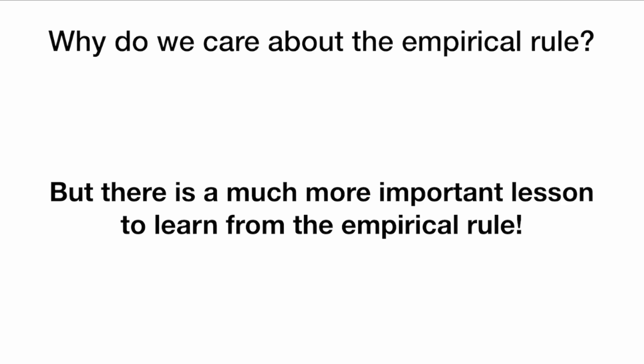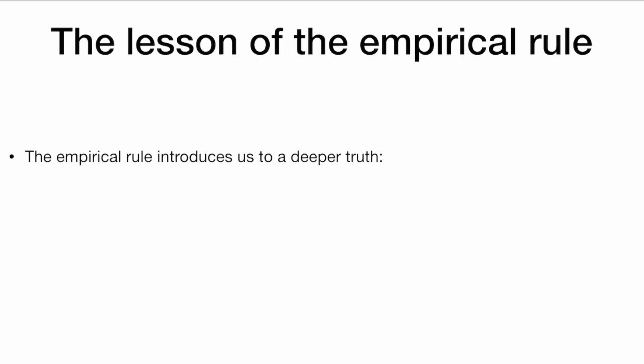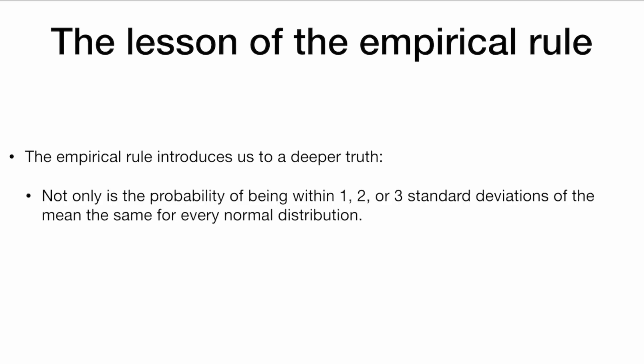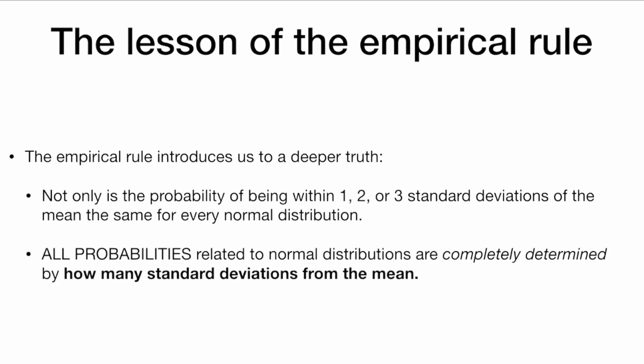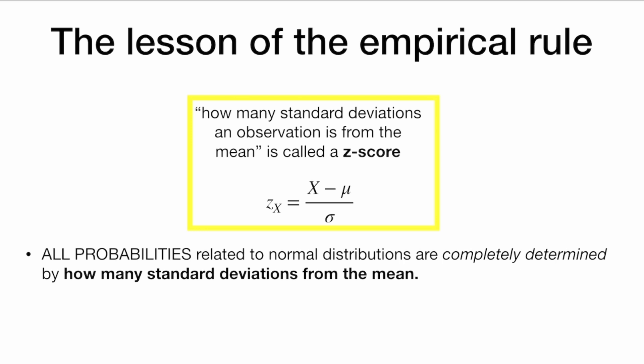But there is a much more important lesson to learn from the empirical rule. Not only is the probability of being within one, two, or three standard deviations of the mean the same for every normal distribution, but all probabilities related to normal distributions are completely determined by how many standard deviations from the mean that observation is. How many standard deviations an observation is from the mean is called the z-score. The z-score of x is its distance from the mean — x minus mu divided by sigma, the standard deviation — and this tells us how many standard deviations an observation is from the mean.